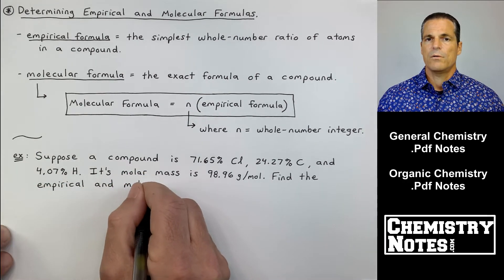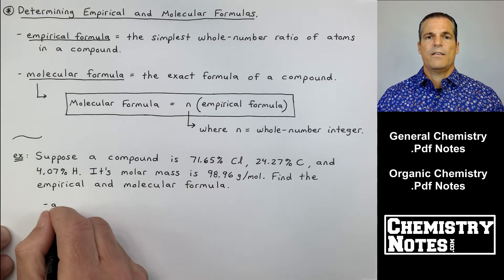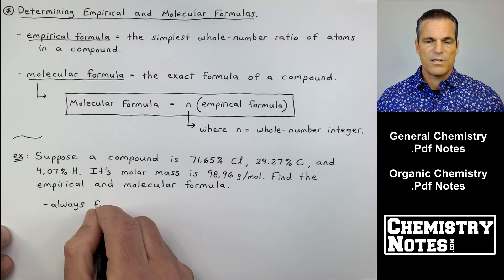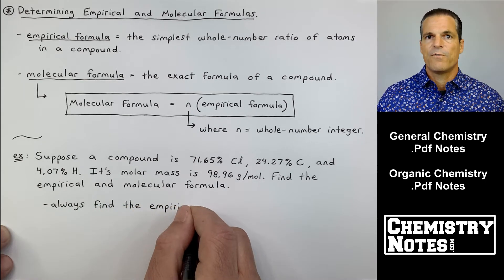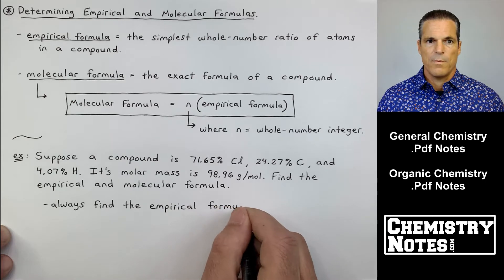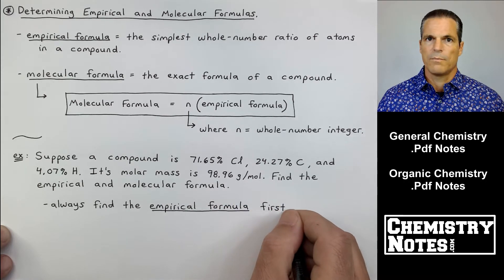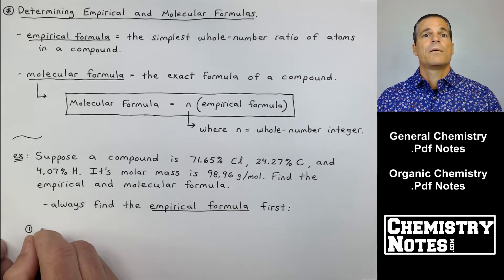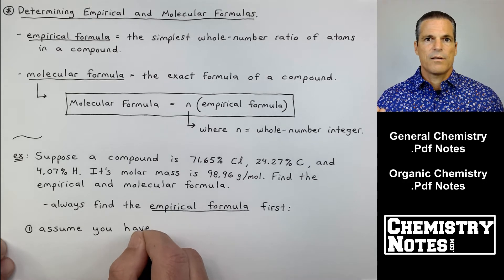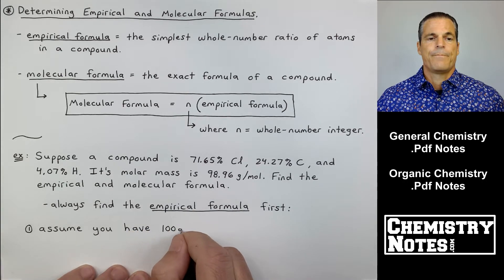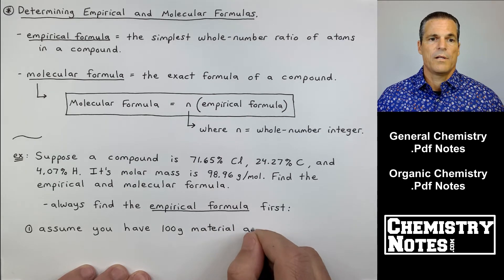Find the empirical and molecular formula. You always find the empirical formula first. Just think of it like in alphabetical order or something - E before M. You find the empirical formula first. That is kind of prior to rule number one. Most of these rules are how to find the empirical formula.